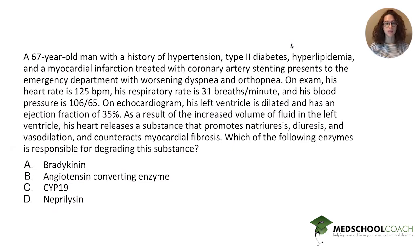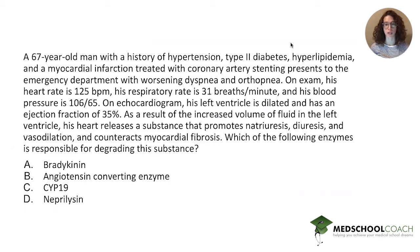A 67-year-old man with a history of hypertension, type 2 diabetes, hyperlipidemia, and a myocardial infarction treated with coronary artery stenting presents to the emergency department with worsening dyspnea and orthopnea. On exam, his heart rate is 125 beats per minute, his respiratory rate is 31 breaths per minute, and his blood pressure is 106 over 65.